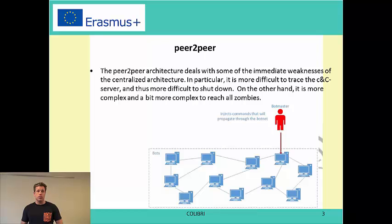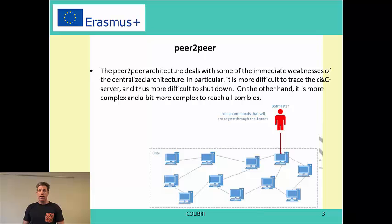Here it is more difficult to trace the command and control server and therefore it is also more difficult to shut down. It is also more reliable in the sense that if one or more computers are removed it does not really do any harm. If you find one infected computer you can see who it is communicating with, but probably it is not the bot master, and it is very hard to roll back to find the command and control server. But it is also a more complex structure, it takes time to reach all nodes, and it is harder to control.